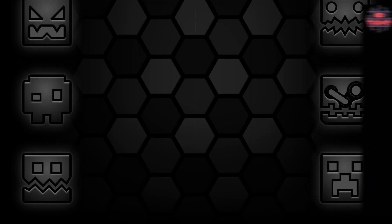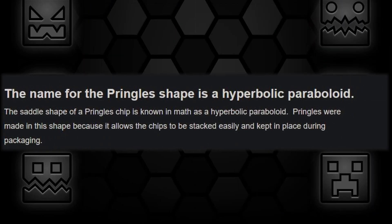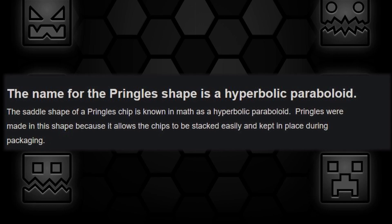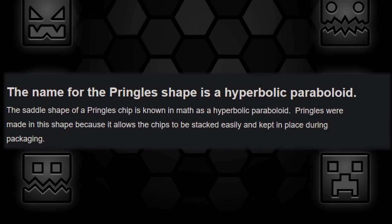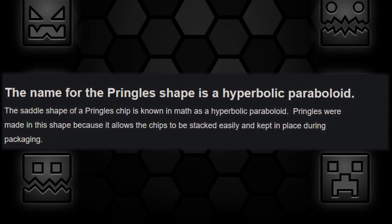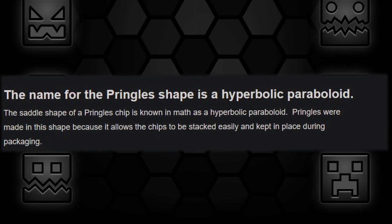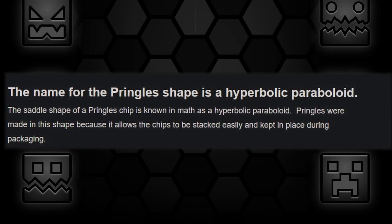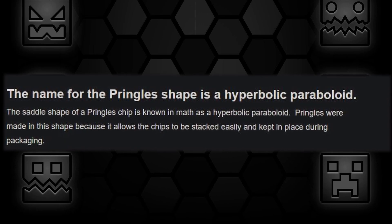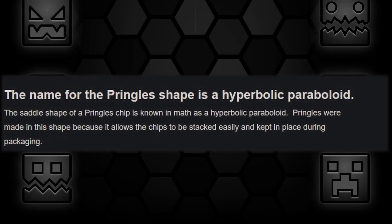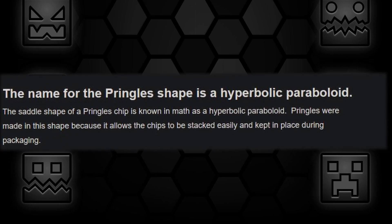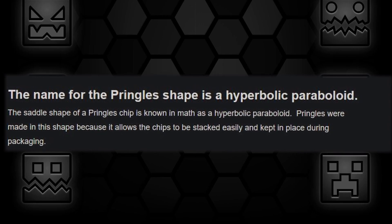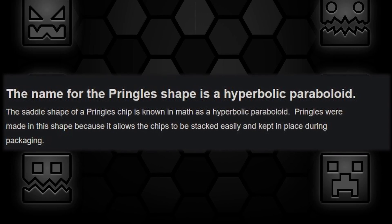And for today's random fact: the name for the Pringles shape is a hyperbolic paraboloid. The saddle shape of a Pringle chip is known in math as a hyperbolic paraboloid. Pringles were made in this shape because it allows the chip to be stacked easily and kept in place during packaging.